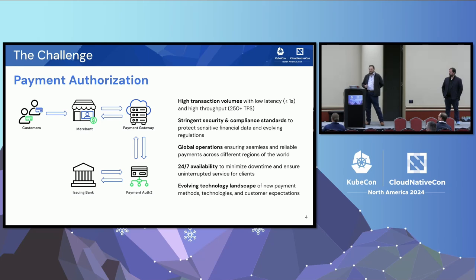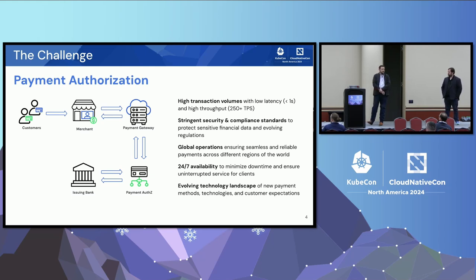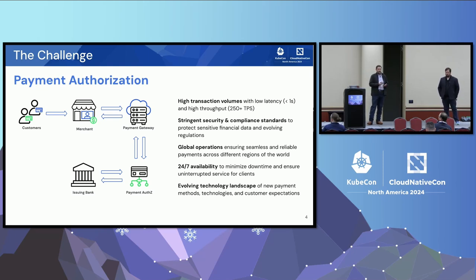It's one of those funny things — when I got into the payment industry, I never noticed how long a credit card swipe took. But once you start paying attention, you notice sometimes it feels really long or really fast. We also have a high amount of throughput — the payment gateway we're talking about today aims for about 250 transactions per second. While we're doing that, we have to worry about stringent security and compliance standards like PCI to protect your sensitive financial data. These regulations are constantly evolving to match the threat actors that are out there.